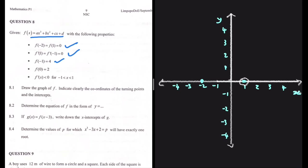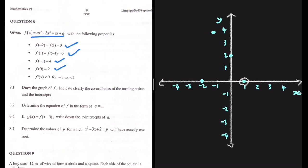f(-1) = 4, so we have a coordinate there. And f(0) = 2, which is our y-intercept. The gradient of our graph is less than 0 when x is between -1 and 1. Let's try connecting these points. At x = -1, y = 4, we have a turning point, and the same is true at x = 1 — we have a turning point there too, giving us something that looks like this.